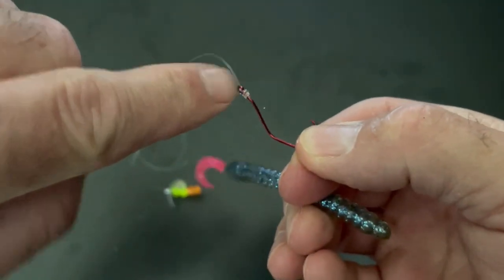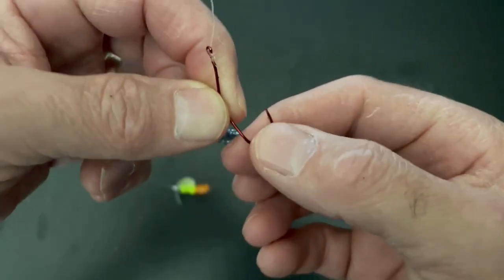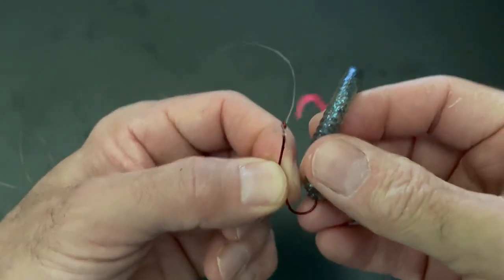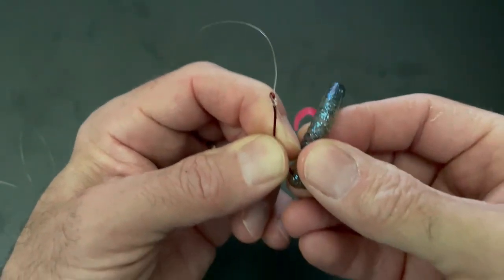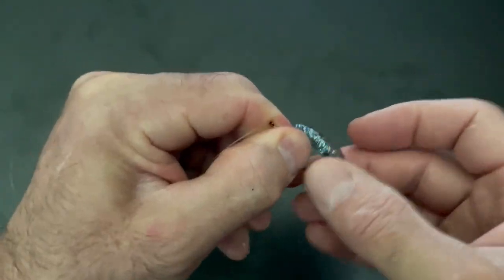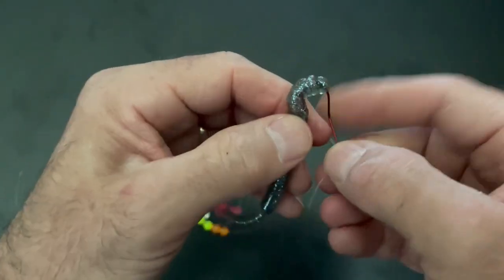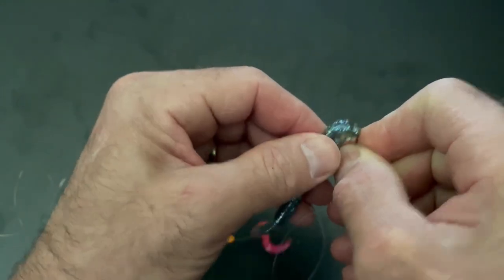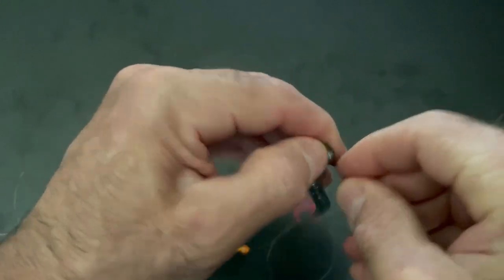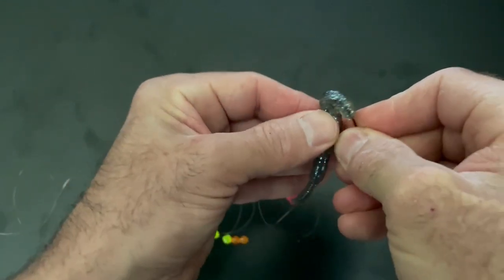You want to thread this thing all the way up over the eyelet there. So you want to thread all the way up, cover the entire hook and the eyelet. You're going to take your time and do a really good job of threading this through. Don't just do a quick and sloppy job. Make sure you do a good job. This is your final presentation. This is what the fish is going to be swimming up to and biting on so you can catch them.